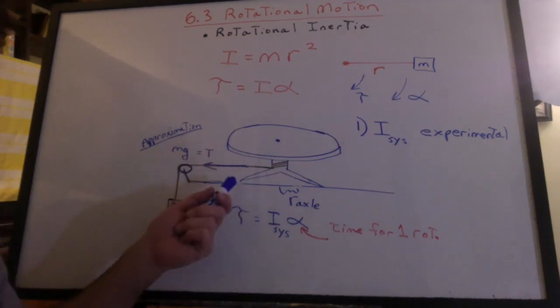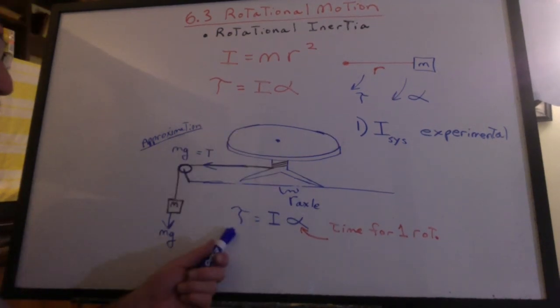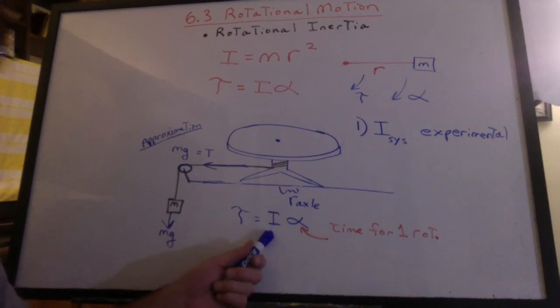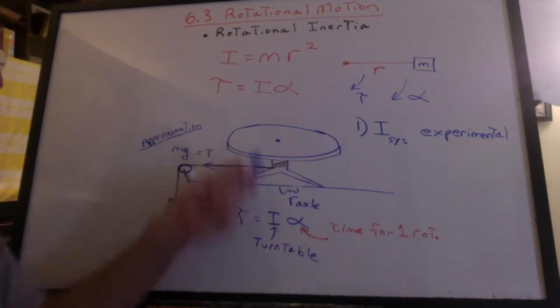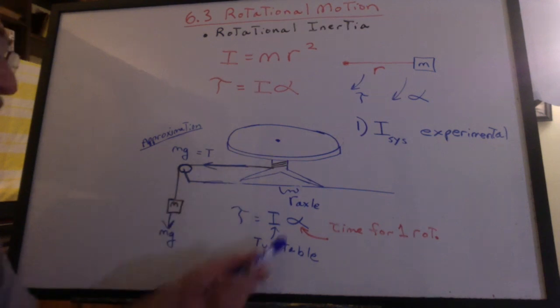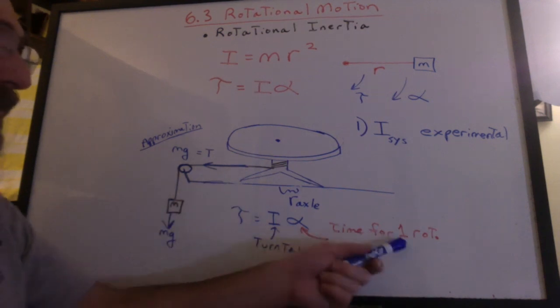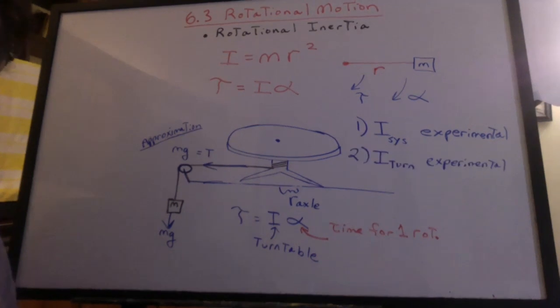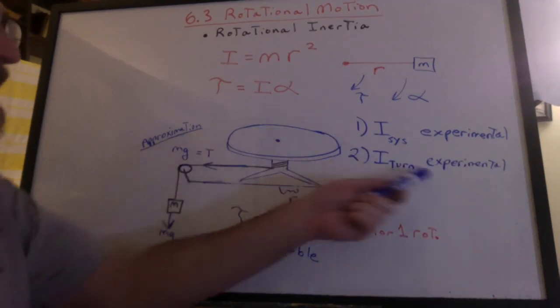Hey, we do it again. But this time with the weights off. The torque will be the same. The inertia is going to be of the turntable without the masses. This is going to be found from the time for one rotation without the masses. So now you'll be able to calculate the inertia of the turntable experimentally.